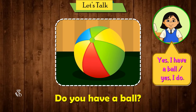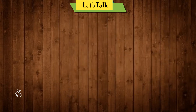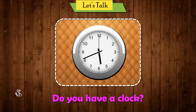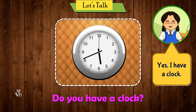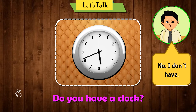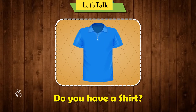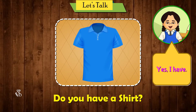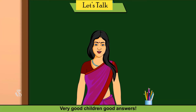Do you have a ball? Yes, I have a ball. Yes, I do. No, I don't. Do you have a clock? Yes, I do. Yes, I have a clock. No, I don't have. Do you have a shirt? Yes, I have. No, I don't have.